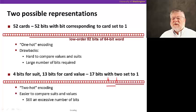In this case, 17. This is what's called a two-hot encoding now, because we have two bits set to one for each card.